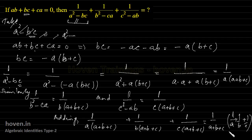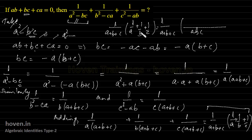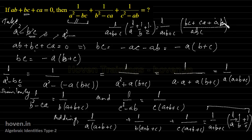Simplifying: 1 by (a+b+c) into (bc plus ca plus ab) by abc. But bc plus ca plus ab is already given as 0. So this becomes 0 by abc, which equals 0. The answer is 0.